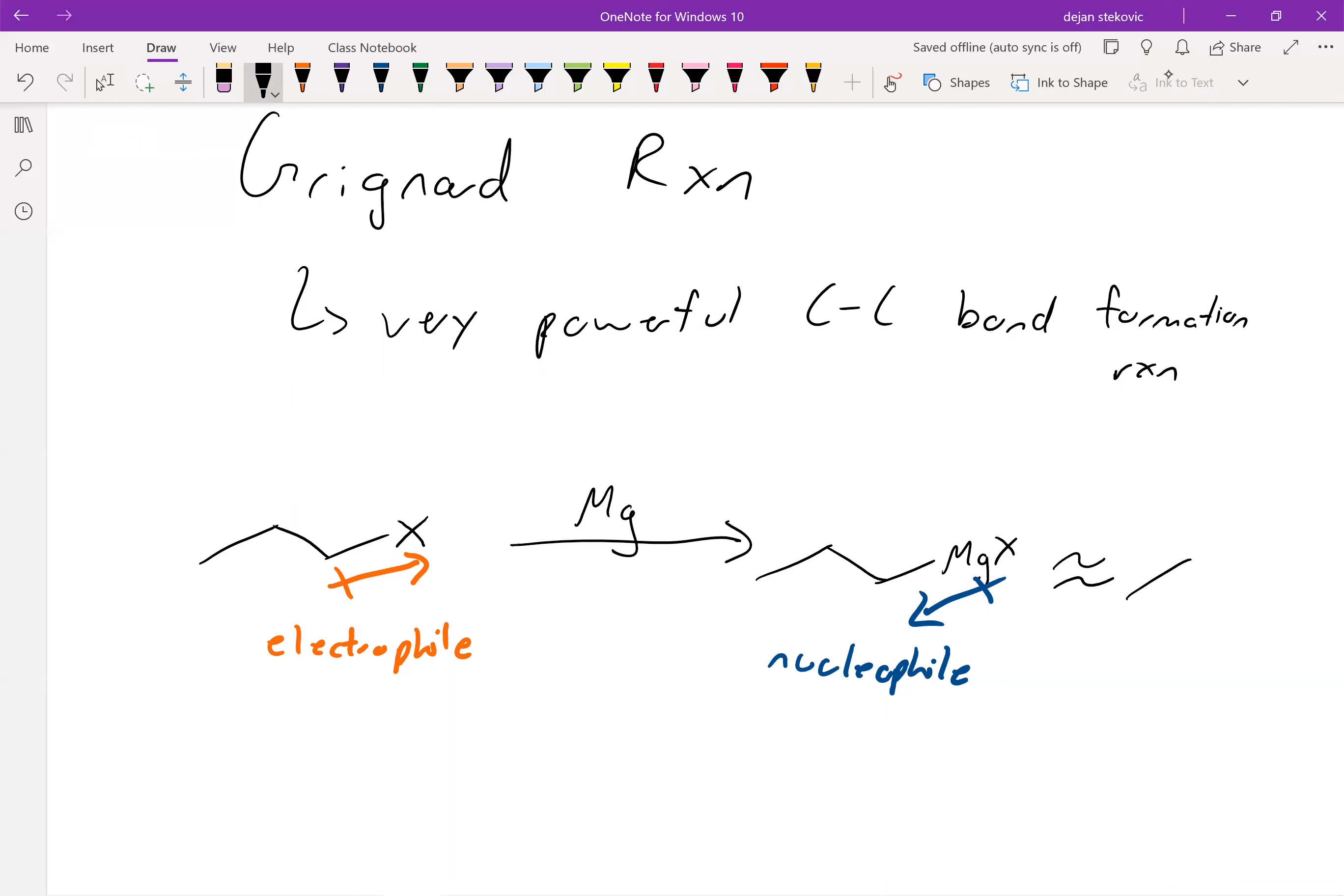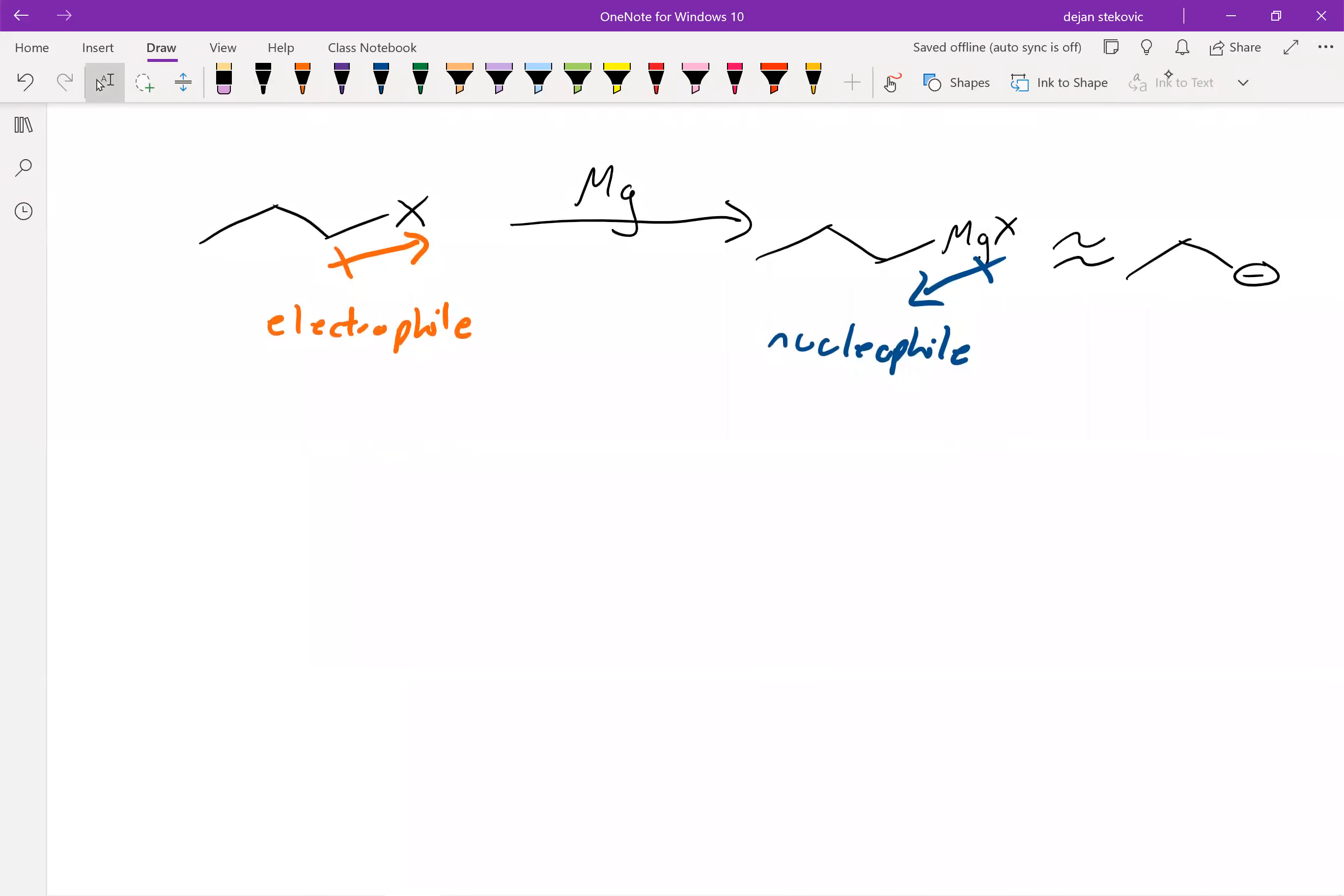So basically what this is acting as is kind of like a C minus, if you want to think about it that way. Depending on whose mechanism you look at, some people just draw it as a C minus. And so similar to the reducing agents to the sodium and the lithium aluminum hydrides, we can use this to reduce carbonyls.